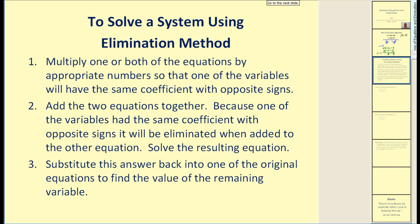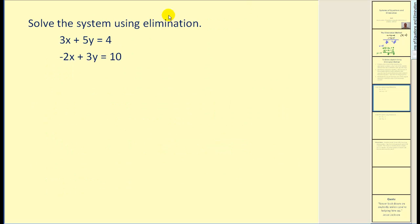In general, how we're going to solve a system using the elimination method: Step one, multiply one or both equations by appropriate numbers so that one variable will have the same coefficient with opposite signs. Then add the two equations together because one variable will be eliminated. Solve the resulting equation and substitute this answer back into one of the original equations to find the remaining variable. The key is either the x terms or the y terms must be opposites.